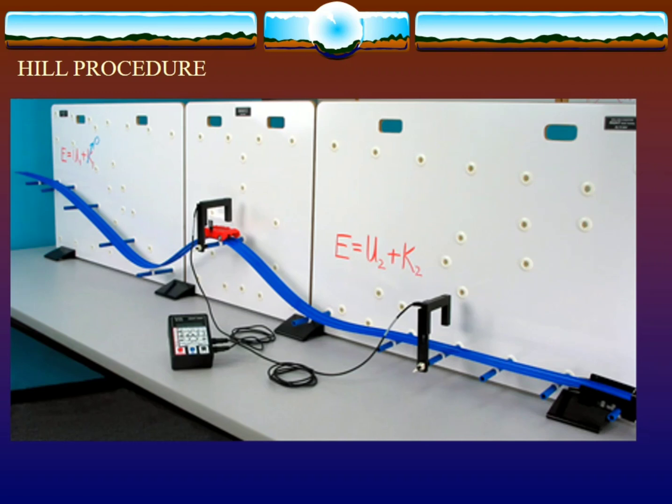Now this is a photo of the hill procedure, part one of this experiment. It consists of a roller coaster attached with sensors and the car. At the first position, mechanical energy E equals U plus K, and must equal mechanical energy E equals U2 plus K2.